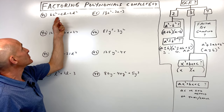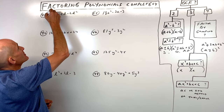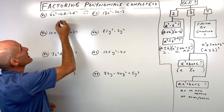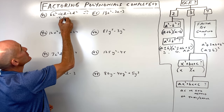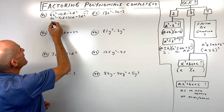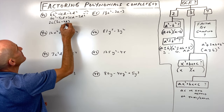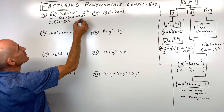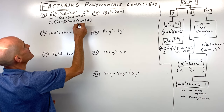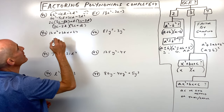Number forty-one, 6c squared minus cd minus 2d squared. It's a trinomial with leading coefficient not 1. Using the AC method on the coefficients: 6 times negative 2 is negative 12. What multiplies to negative 12 but adds to negative 1? That's negative 4 and positive 3. Split as negative 4cd and positive 3cd. Bring down 6c squared and negative 2d squared. Factor by grouping: factor out 2c to get 3c minus 2d, then factor out d to get 3c minus 2d. Factor out 3c minus 2d to get 2c plus d times 3c minus 2d.